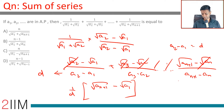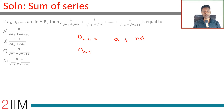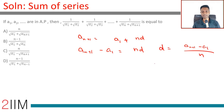We don't have d directly, so we need to find the common difference. Now a_{n+1} = a1 + n·d, so a_{n+1} - a1 = n·d, which gives d = (a_{n+1} - a1)/n. Therefore 1/d = n/(a_{n+1} - a1).